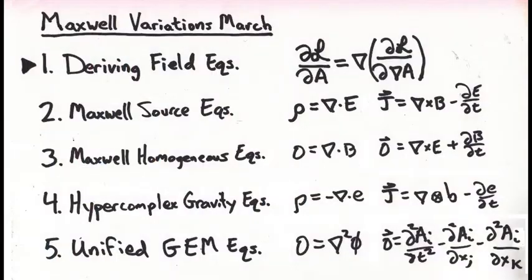Here is the roadmap for the next few weeks of my blogs. We start by deriving the field equations, known formally as the Euler-Lagrange equations. The next week we show how to use those Euler-Lagrange equations to derive the Maxwell source equations — Gauss's law and Ampere's law. Then we derive the homogeneous equations, which is the no-monopoles rule and Faraday's law. Then I will show my first variation: the hypercomplex gravity equations, where instead of multiplying using the rules of quaternions, I use hypercomplex rules and end up with something very similar in structure to Gauss's law and something very similar to Ampere's law.